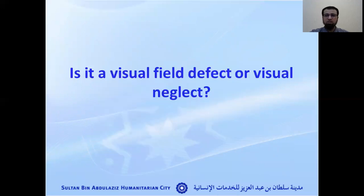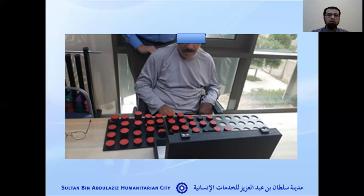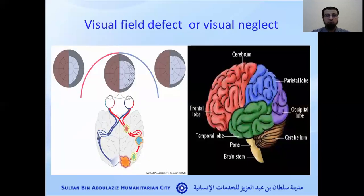There is a very important question we need to ask: is the patient having a visual field defect, visual neglect, or both together? This is one of our patients doing this exercise — as you see, he filled all of the parts on the right side in front of him but missed the left side. Upon assessment, this patient was found to have both visual field defect and visual neglect. Visual neglect differs from visual field defect in presentation, but sometimes they look similar.